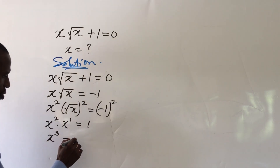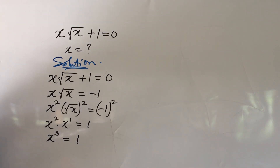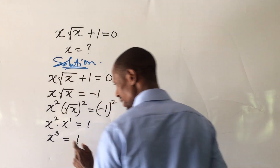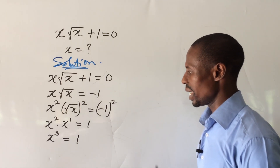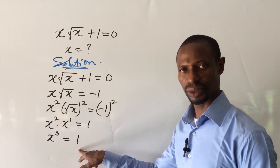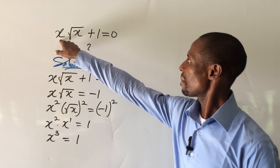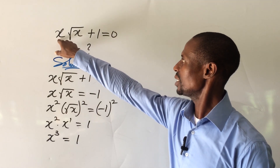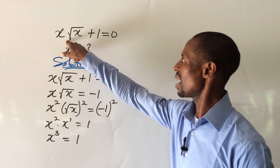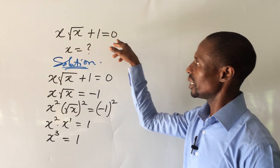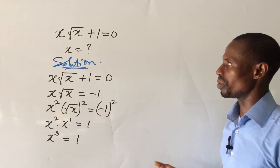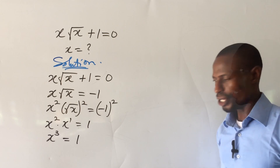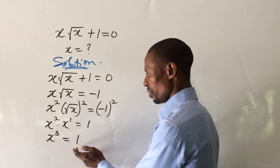x to the power of 3 equals 1. If we decide to take the cube root of both sides, we're going to come up with x equal to minus 1. But if you plug x equals minus 1 into this expression, it will not give us 0 — the left-hand side of the equation will not give us 0. So what we do here is move this 1 to the left-hand side of the equation.